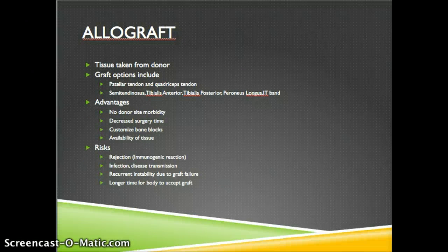An allograft is where the tissue is taken from a donor such as a cadaver. Graft options include patellar tendon and quadriceps tendon — both bone-tendon-bone grafts with bone block options — as well as semitendinosis, tibialis anterior, tibialis posterior, peroneus longus, or IT band, all soft tissue options. Advantages of an allograft include no donor site morbidity, decreased surgery time, and the ability to customize bone blocks. Risks include immunogenic rejection, infection or disease transmission, recurrent instability due to graft failure, and longer time for the body to accept the foreign graft.